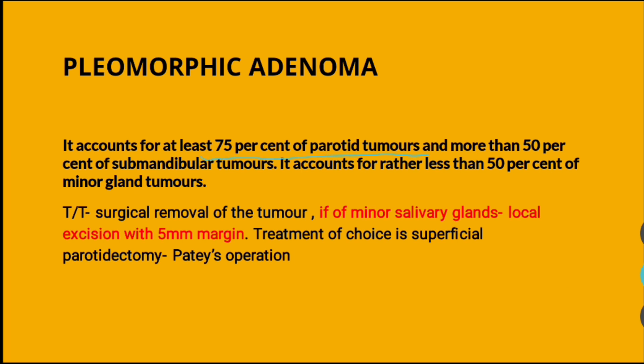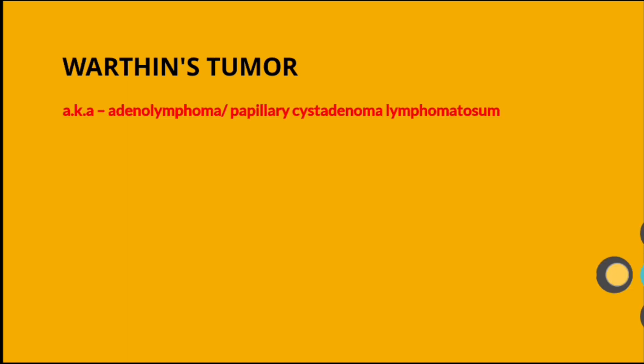Pleomorphic adenoma is the most common type of parotid tumor — 75% of parotid tumors are pleomorphic adenoma. More than 50% of submandibular tumors are pleomorphic adenoma, and less than 50% of minor gland tumors. For minor salivary glands, you do local excision with a 5 mm margin — this measurement was directly given as an option in a previous year's question. Treatment of choice for parotid is superficial parotidectomy, called Patey's operation.